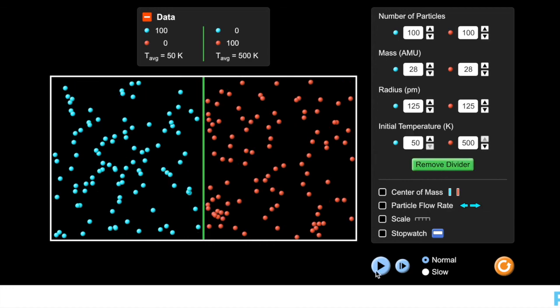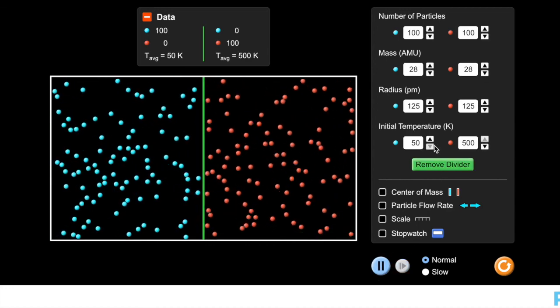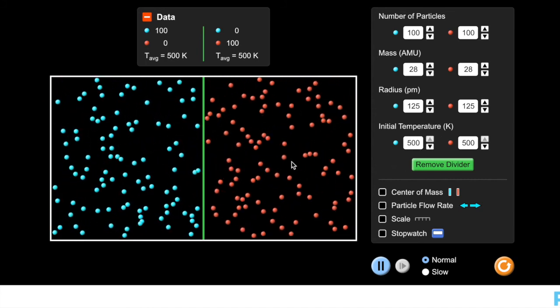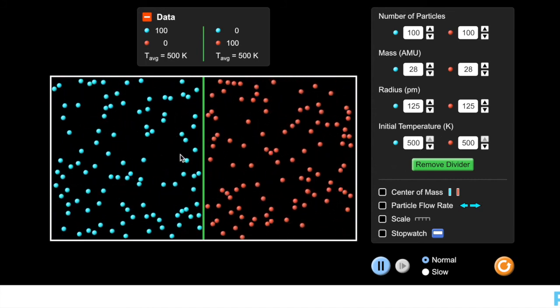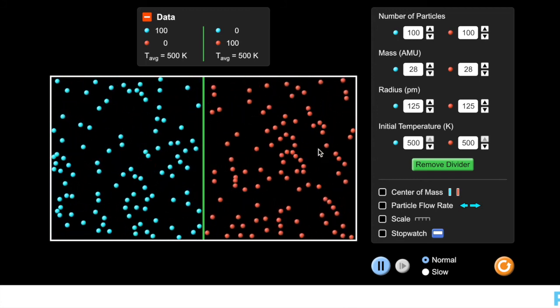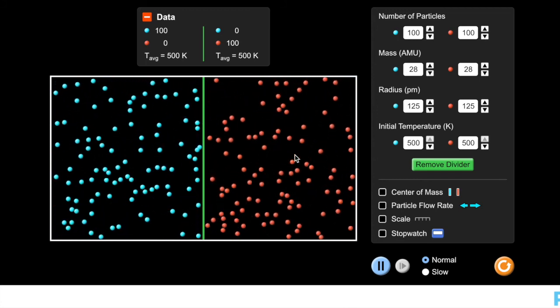So let's reset our divider one more time. I'm going to hit play. And this time I'm going to have them both at the same temperature. Because I want us to see that this mixing up is going to happen because of entropy. Not just because these have more energy. Not just because we have energy flowing.